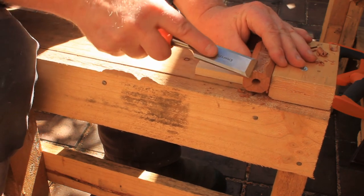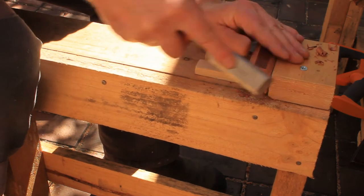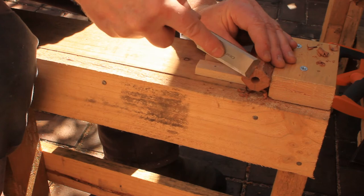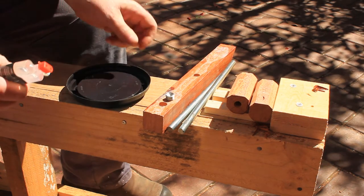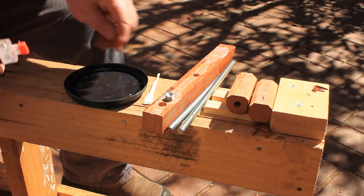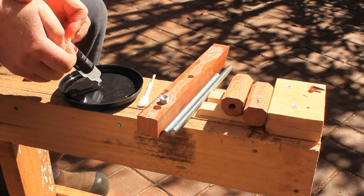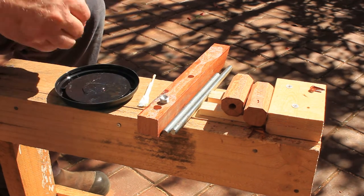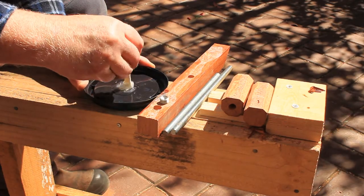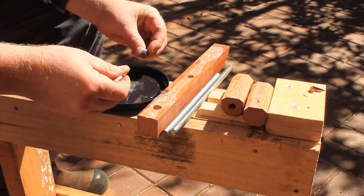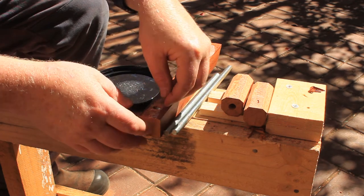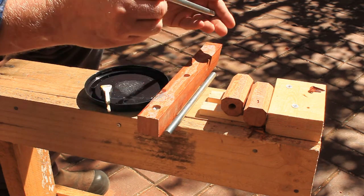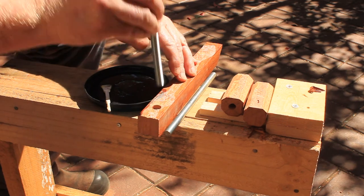You can also use your chisel to remove the sharp edges from the ends of the handles or use sandpaper if you prefer. Now we'll mix some epoxy glue to attach the handles to the rods. First glue the button into the clamp jaw. Then glue the threaded rods into the handles.